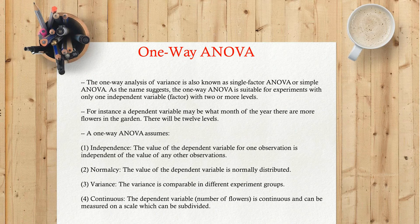A one-way ANOVA assumes: one, independence — the value of the dependent variable for one observation is independent of the value of any other observations; two, normalcy — the value of the dependent variable is normally distributed; three, variance — the variance is comparable in different experiment groups; four, continuous — the dependent variable, such as number of flowers, is continuous and can be measured on a scale which can be subdivided.